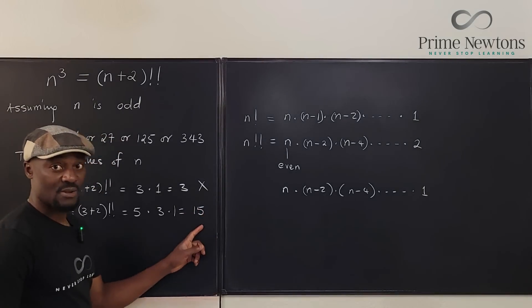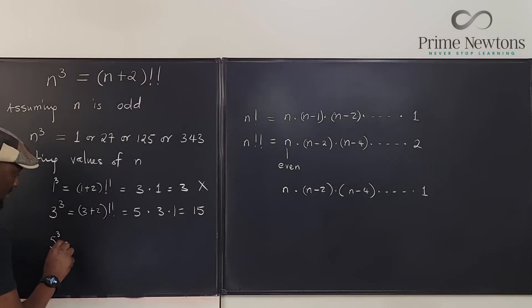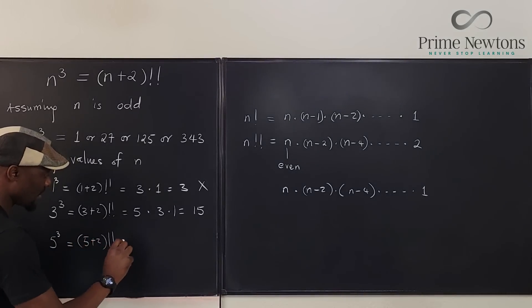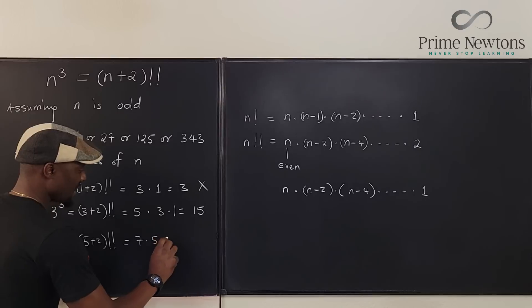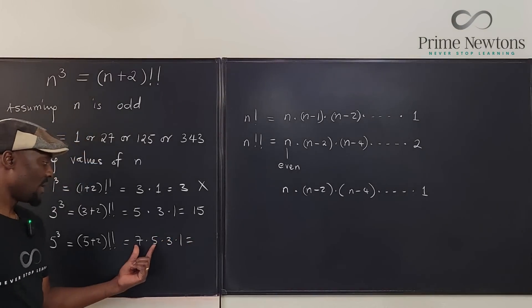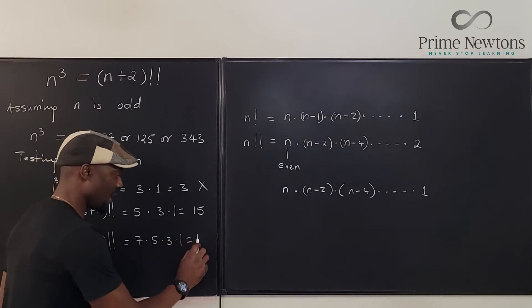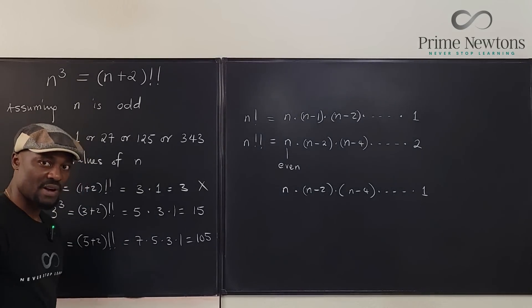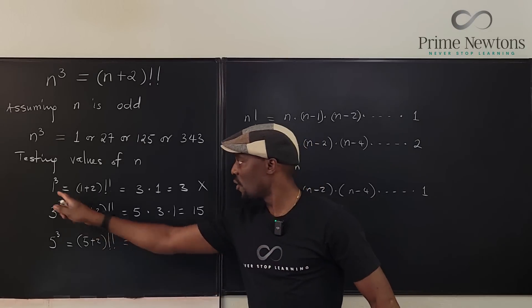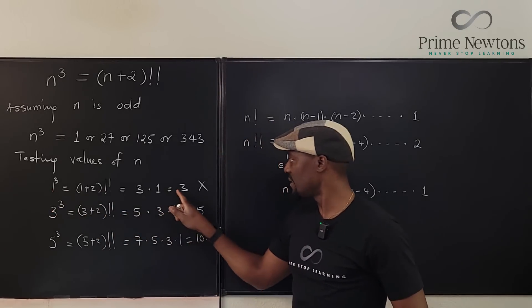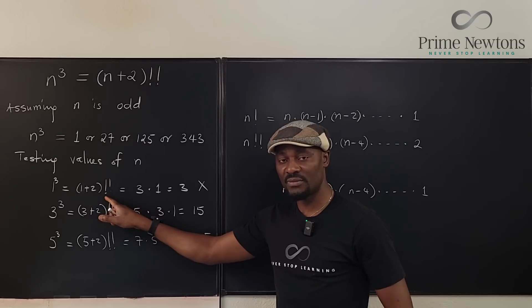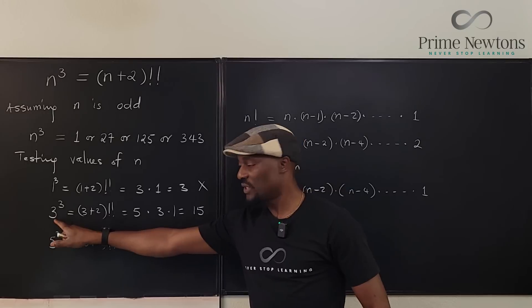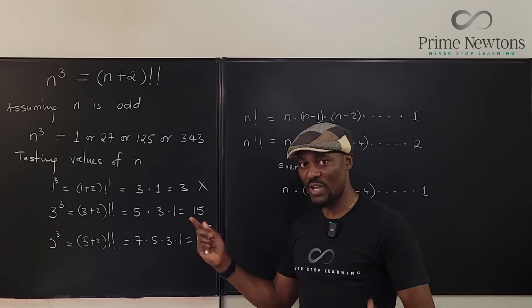27 is not equal to 15. So 5 cubed will be equal to, so this is 5 plus 2 double factorial, which is equal to 7 times 5 times 3 times 1. And this is going to be 35 times 3, which is 105. Now this is 125 and this is 105. So let's go back to what we've done. The polynomial was less than the double factorial, double factorial, but here the polynomial, which is 27, is greater. So it means they've crossed.